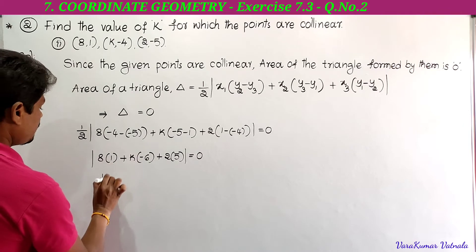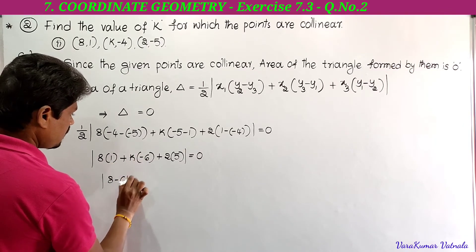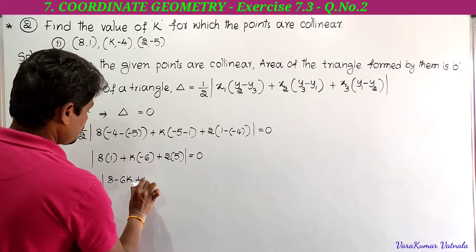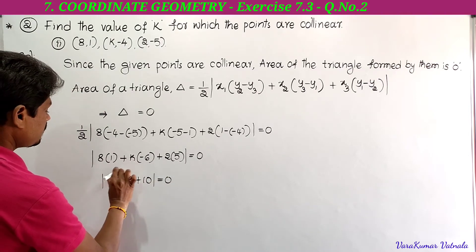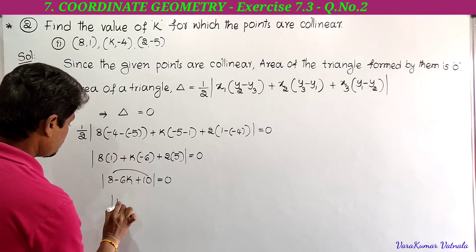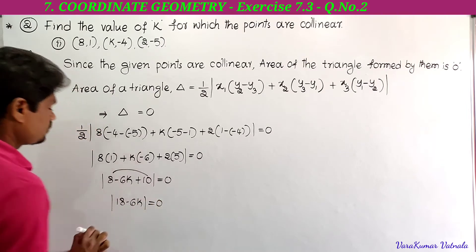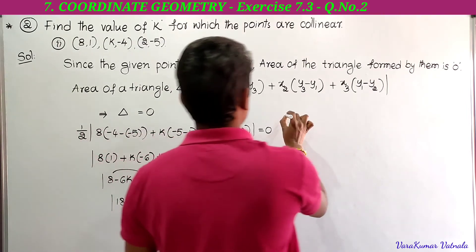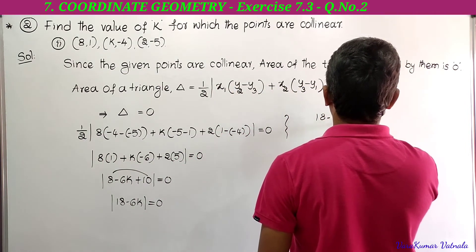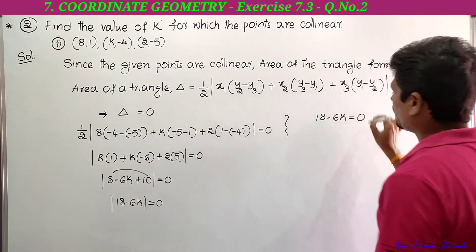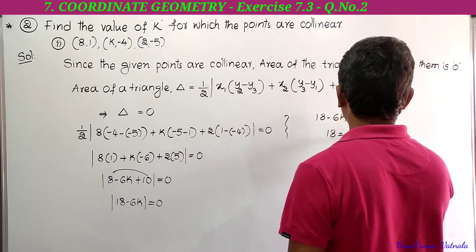Further: 8 into 1 is 8, minus 6k, plus 2 into 5 is 10, equals 0. So 8 + 10 is 18. Therefore 18 - 6k = 0. Removing the modulus, 18 - 6k = 0. Taking -6k to the right side, we get 18 = 6k.